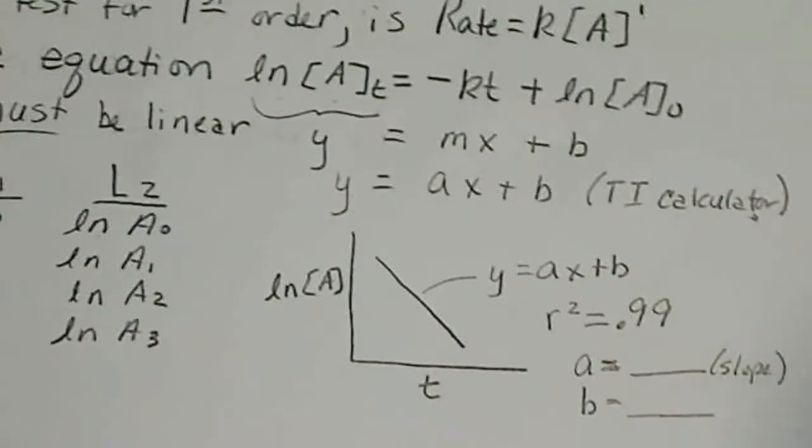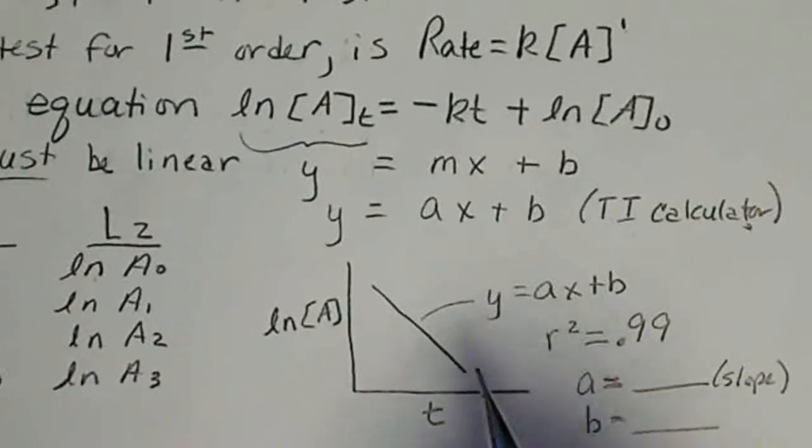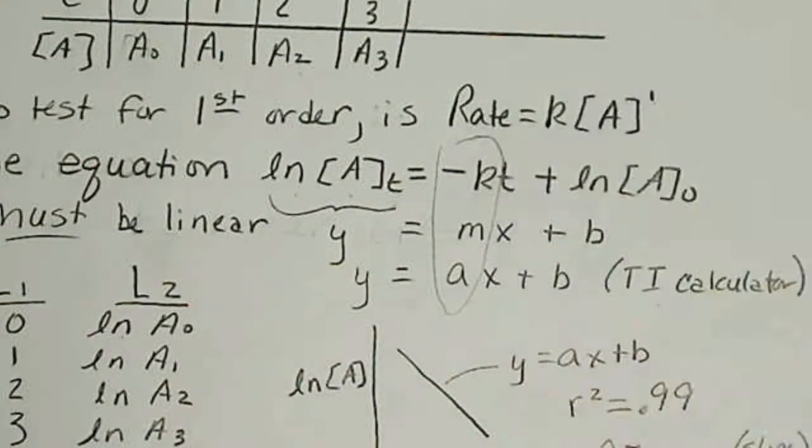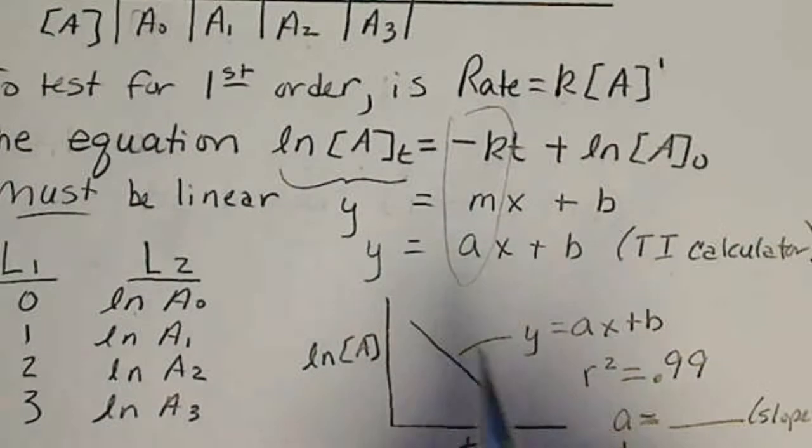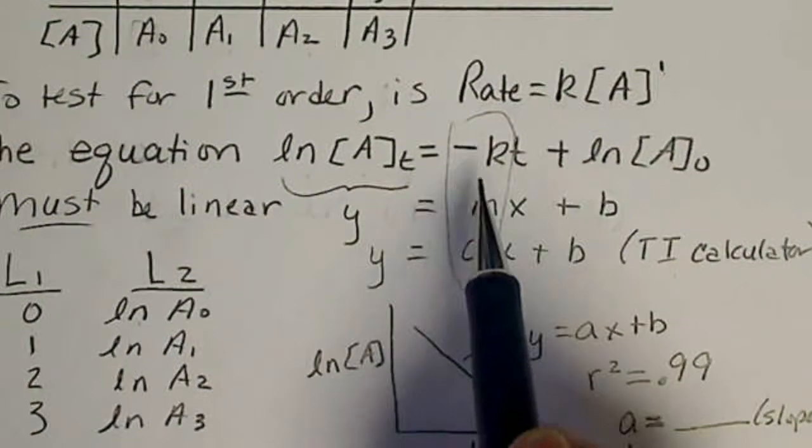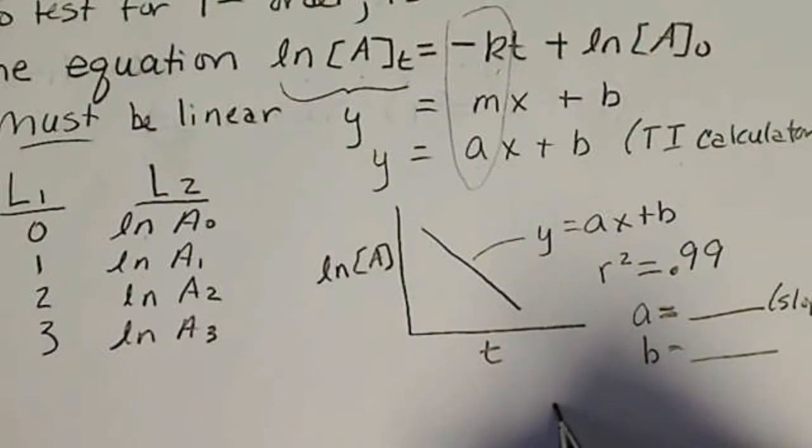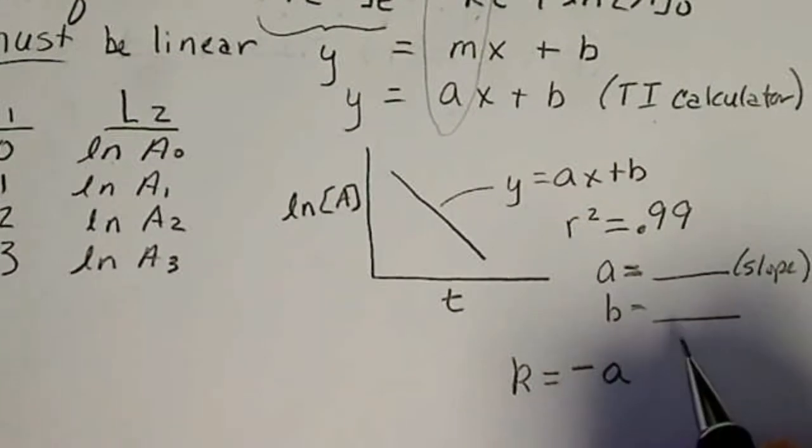And so the slope of the line correlates to the rate constant K. So since A is equal to the opposite of the rate constant, that means the rate constant K is going to be the opposite of the slope that's given.